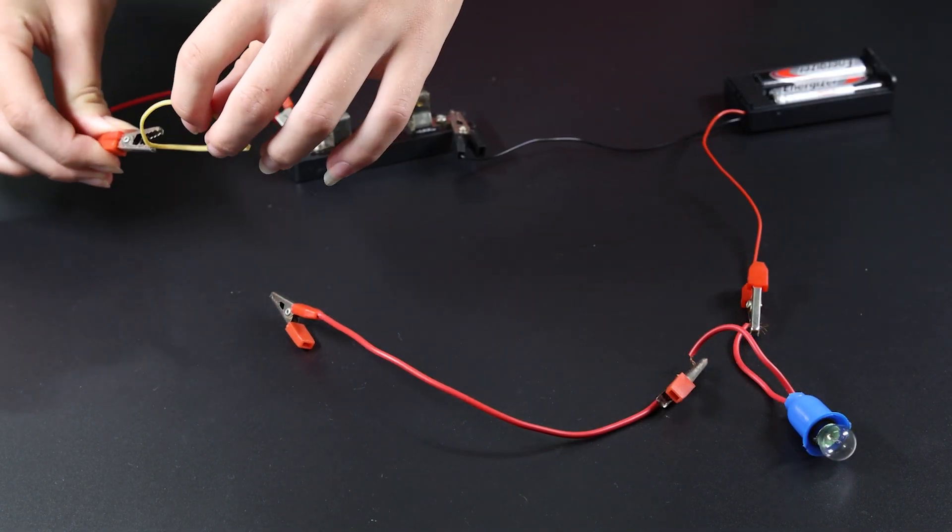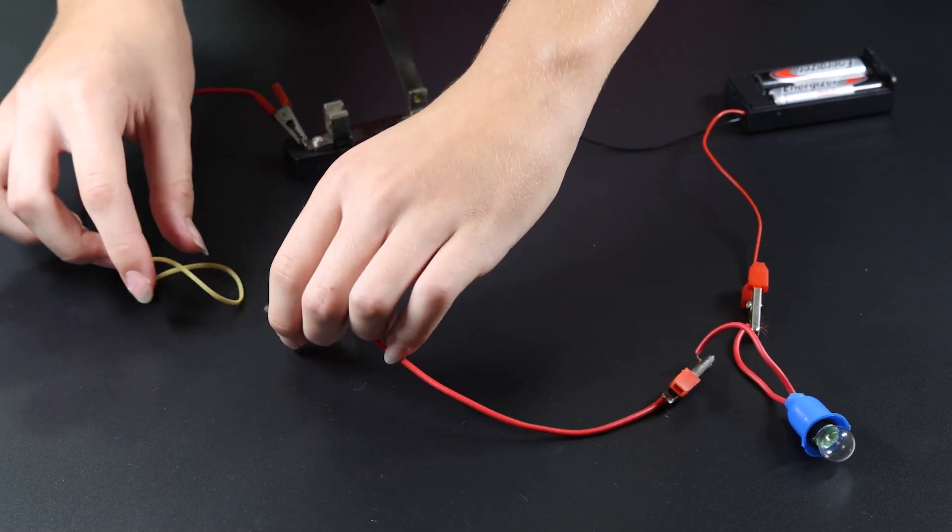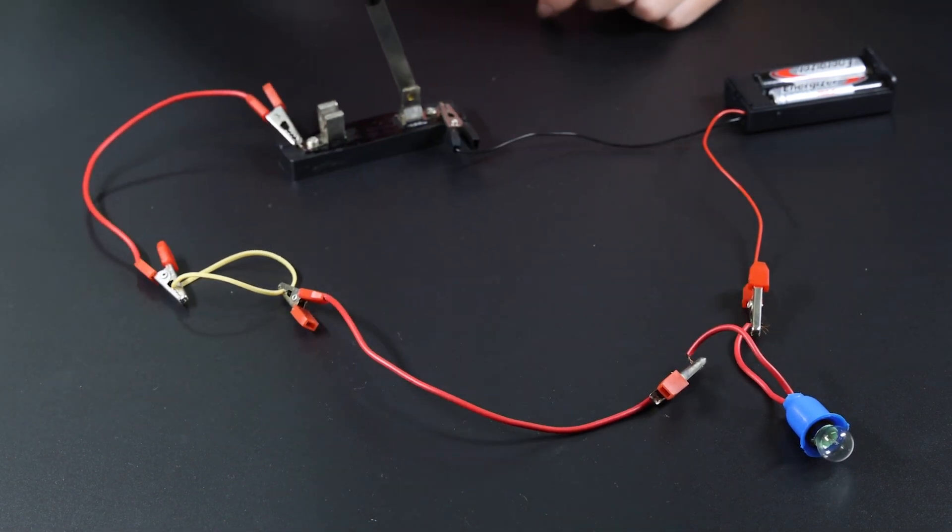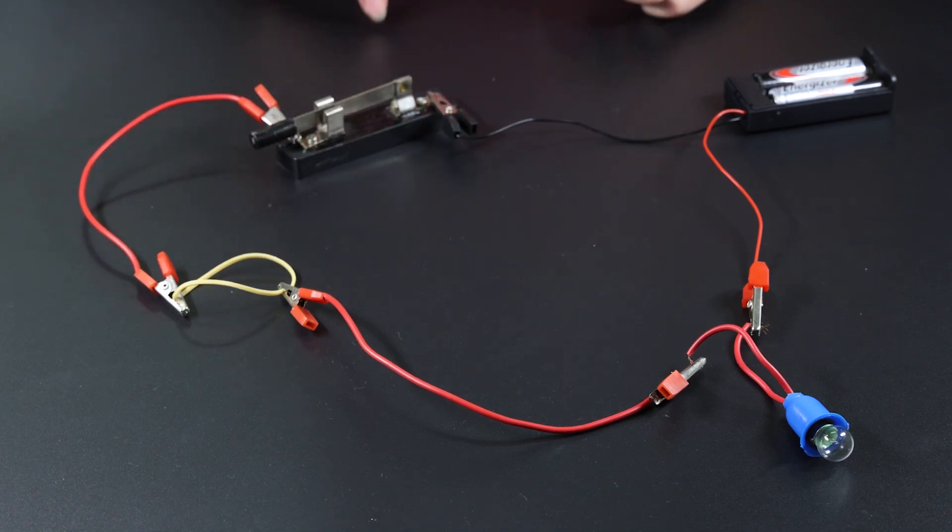Connect a rubber band and close the switch. And the bulb does not light up. The rubber band is an electrical insulator.